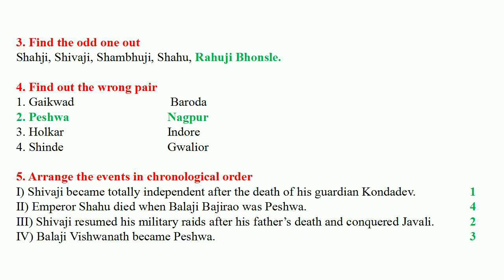Fourth question: find the wrong pair from — Gaekwad-Baroda, Peshwa-Nagpur, Holkar-Indore, Scindia-Gwalior. The wrong pair is Peshwa-Nagpur.